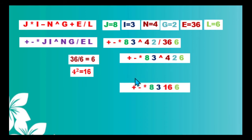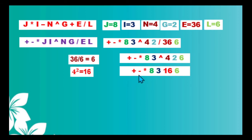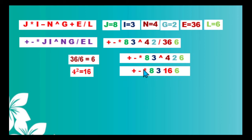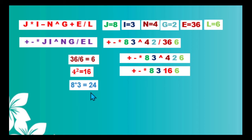Our prefix expression now is: addition operator, subtraction operator, multiplication operator, 8, 3, 16, and 6. We scan this new prefix expression from right to left and look for the first operator. Scanning: 6, 16, 3, 8, multiplication operator — this is our first operator. The immediate two operands to the right are 8 and 3. We perform multiplication: 8 multiplied by 3 equals 24.